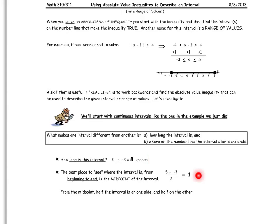The best place to see where an interval is on the number line from beginning to end is from the midpoint, which is in the middle. So if I add 5 and negative 3 and divide by 2, which is the average, I get that 1 is the midpoint of this interval, and half of the interval is on one side, and half of the interval is on the other.